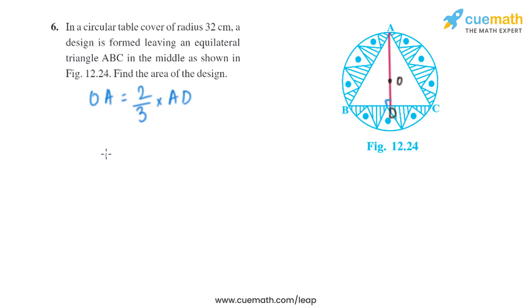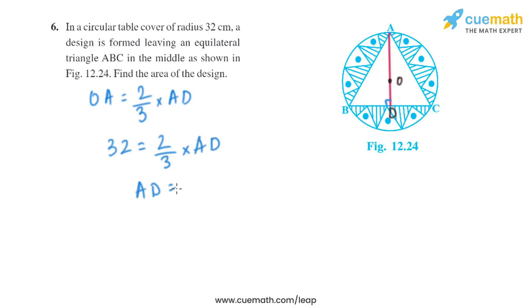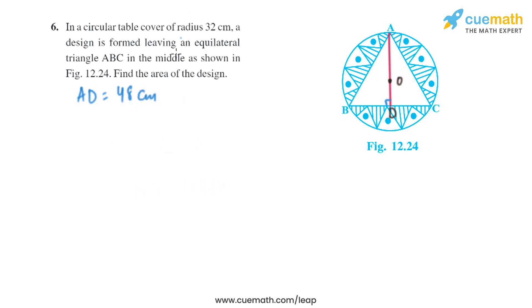So AO equals 2/3 of AD. We have the length of AO, which is the radius: 32 = (2/3) × AD. Solving for AD gives us AD = 48 centimeters.